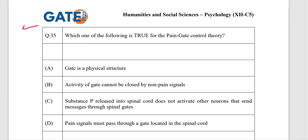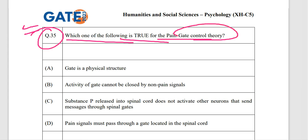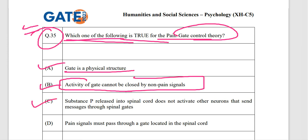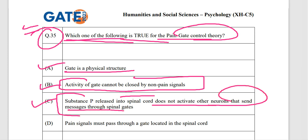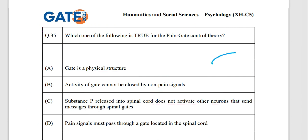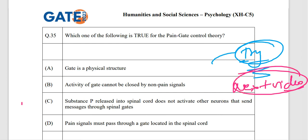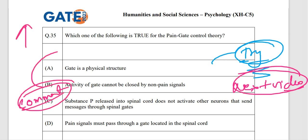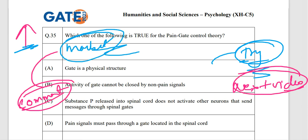Question 35: which of the following is true for the pain gate control theory? Options are: gate is a physical structure; activity of the gate cannot be closed by non-pain signals; substance P released into the spinal cord does not activate other neurons; or deep pain signals must pass through a gate in the spinal cord. Try to answer this — the answer will be discussed in the next video. Comment below with your answer.